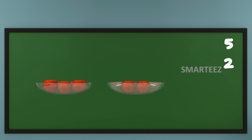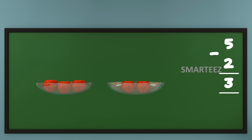For subtraction, we add a minus sign, something like this. So now we have three apples left. When we subtract two from five, we get three. This works the same with candies too. In fact, whenever we subtract two from five or anything, we'll always get three.